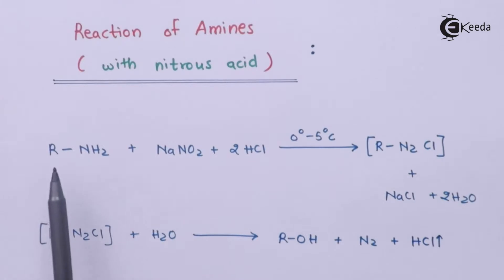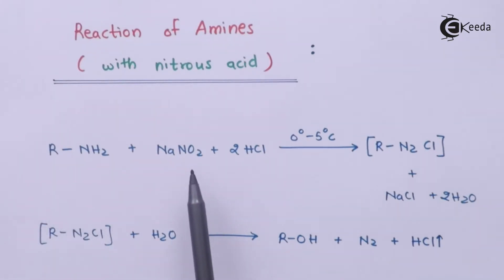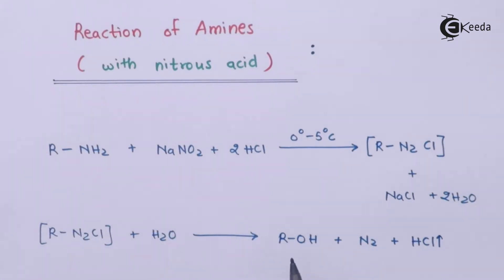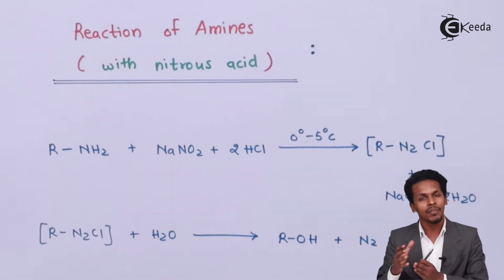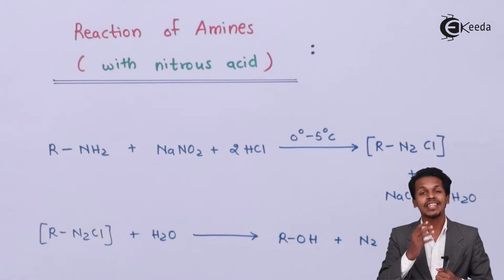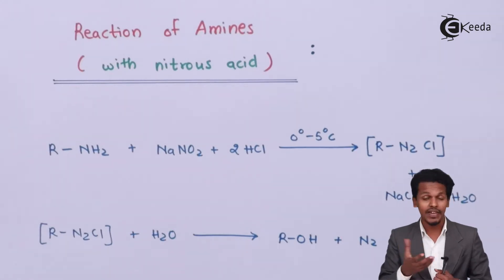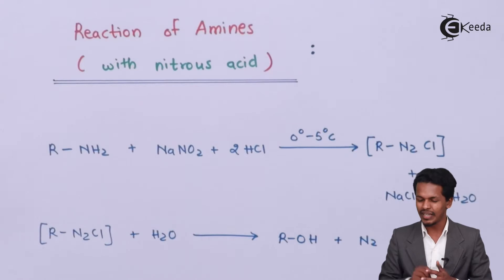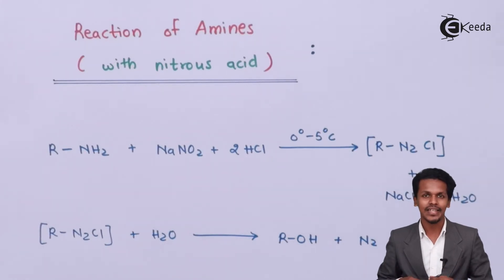So we have converted the primary amine into an alcohol. This reaction can be used to determine whether an amine is primary, secondary, or tertiary. If nitrogen gas is evolved when the amine reacts with nitrous acid, we can easily say the amine is a primary amine. Let me now give an example.